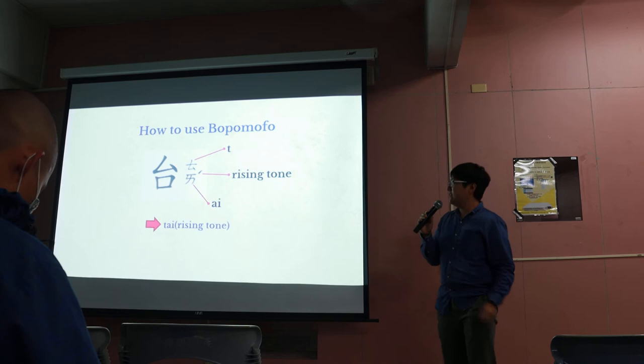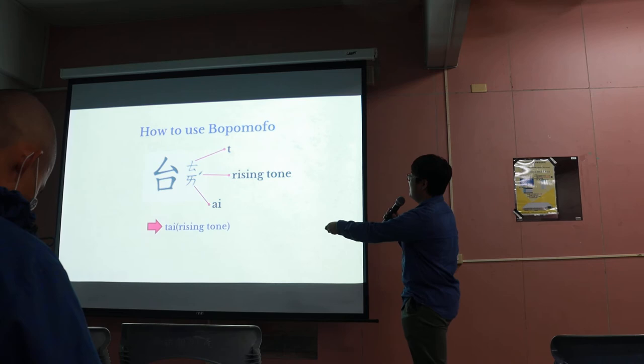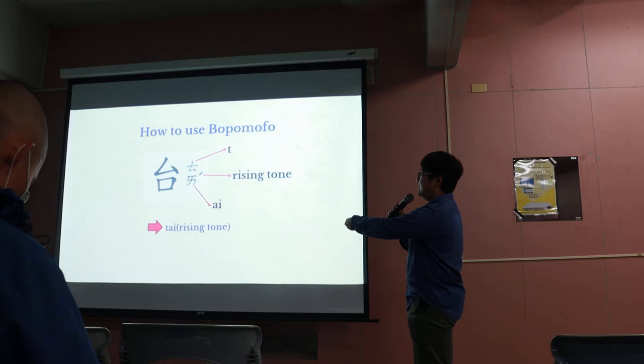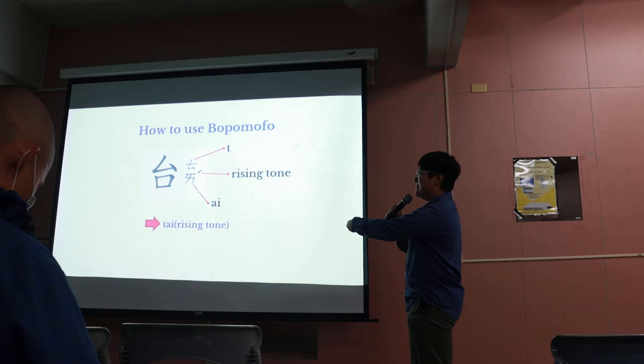So how do you use Bopomofo? Usually the Bopomofo symbols appear to the right side of the character they represent. So this symbol sounds 'Te', this symbol sounds 'Ai', and this symbol is the tone symbol — it is the rising tone. So it's Te, Ai, Tai. To represent the sound of this character. So see? So easy.